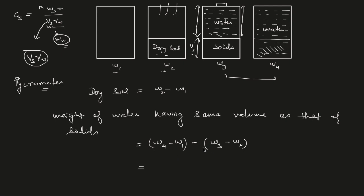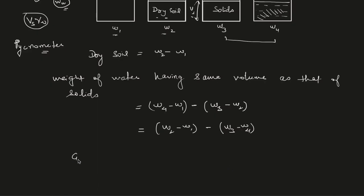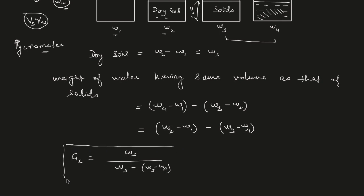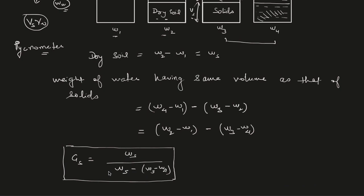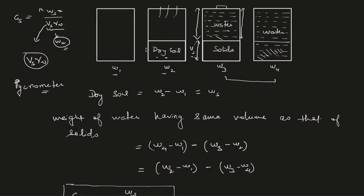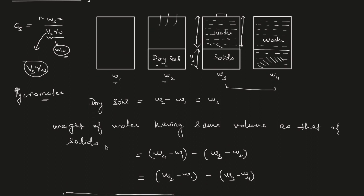Rearranging the terms, the specific gravity of solids Gs equals (W2 minus W1) divided by (W2 minus W1) minus (W3 minus W4). It is easier to remember the method rather than just memorizing this final equation. Once you understand what we have done in this experiment with the pycnometer, it is very easy to find the specific gravity.